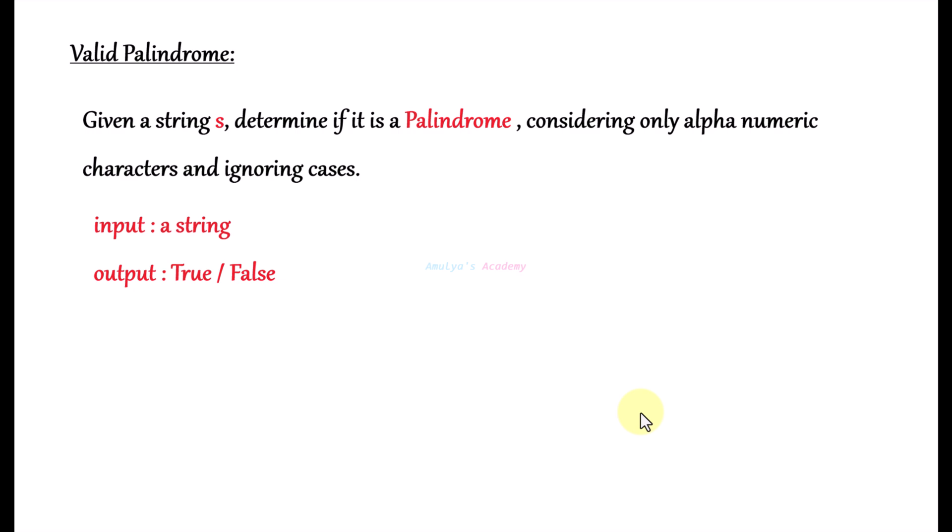Hello and welcome to Amulyas Academy YouTube channel. Today we are going to solve a coding problem called valid palindrome. Given a string s, return true if it is a palindrome and false otherwise. Only consider alphanumeric characters and ignore cases.